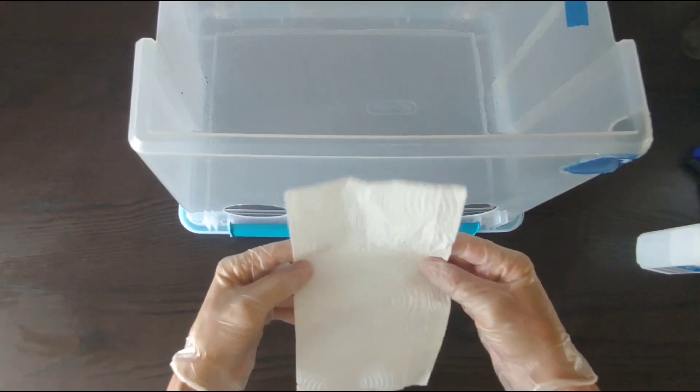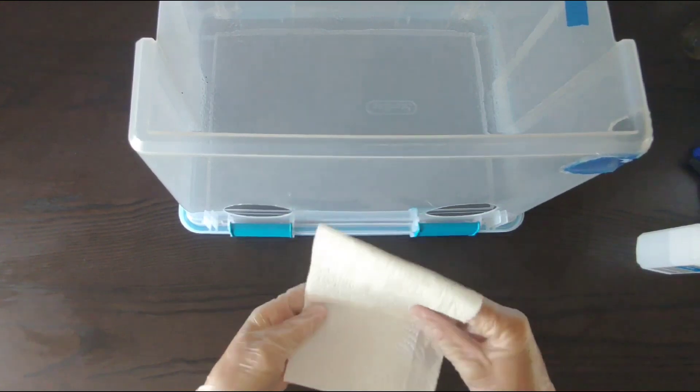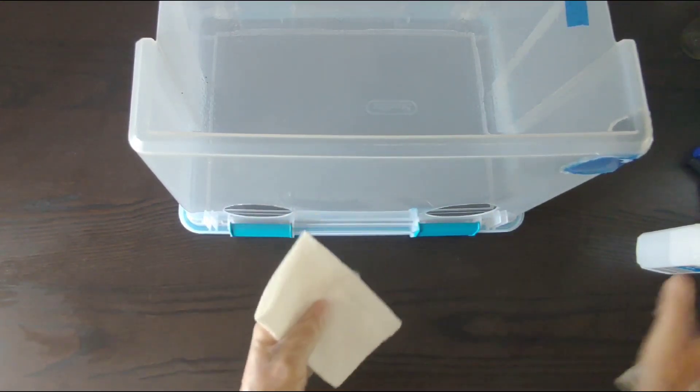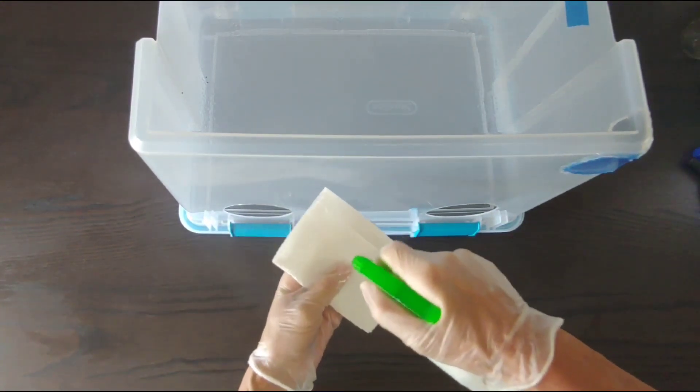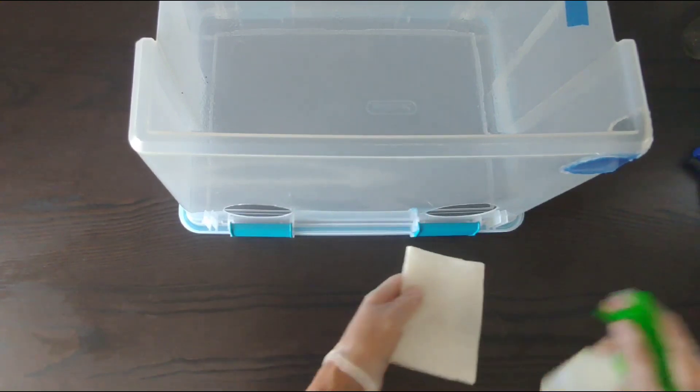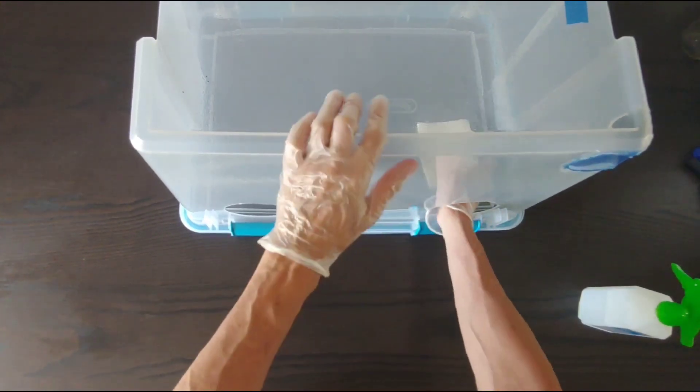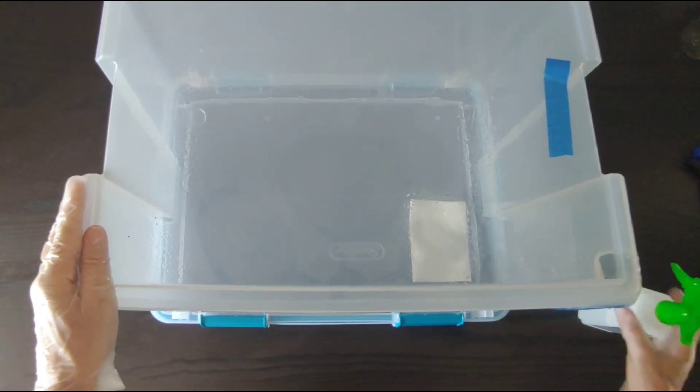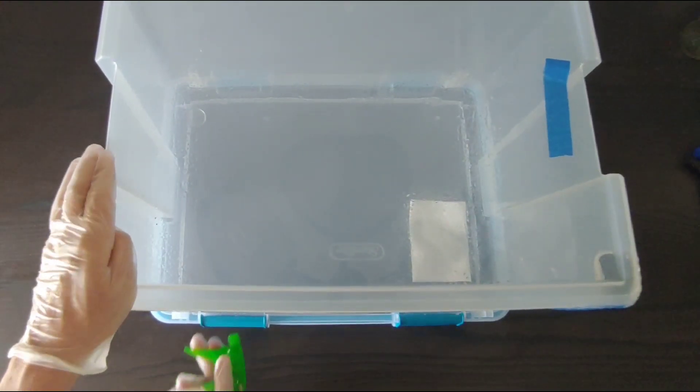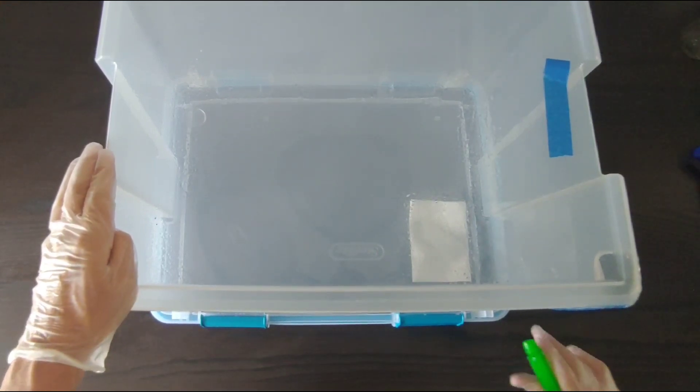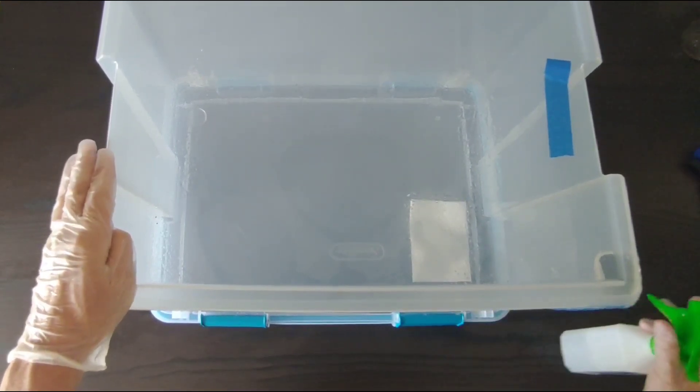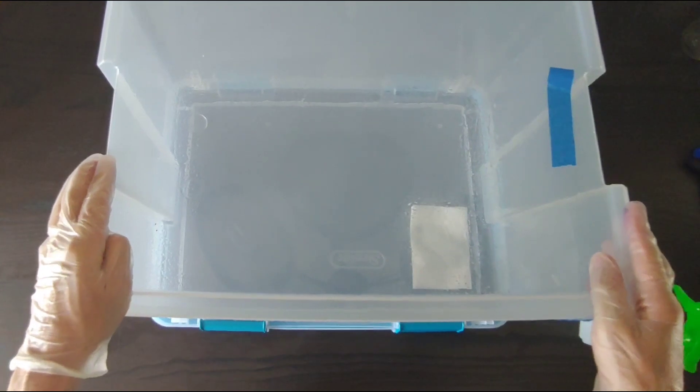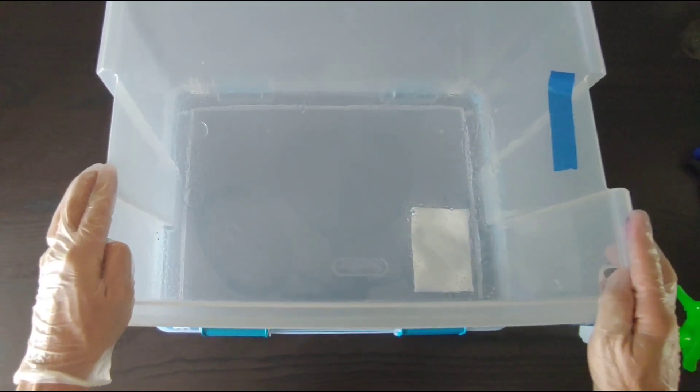So first thing I do is fold this in three. Spray the bottom, spray the top, put it in there on the side where I like it. Then I spray inside again just to get a cloud of alcohol in there. We have that.